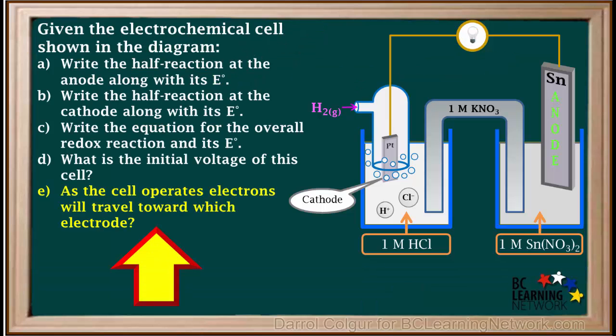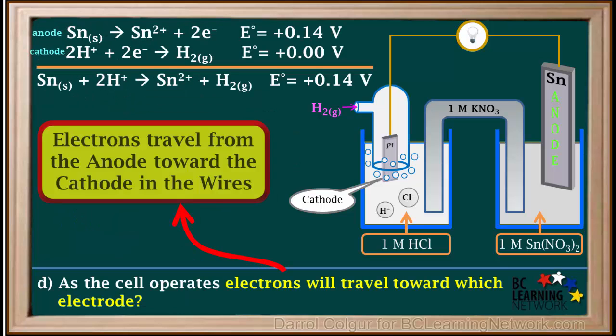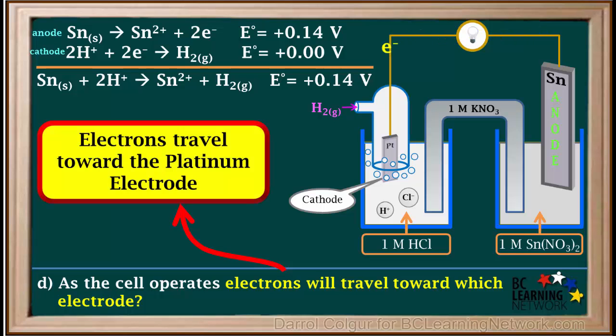The E part of this question asks which way electrons are traveling as this cell operates. The cell will operate if we replace the voltmeter with a light bulb. Remember that electrons always travel from the anode to the cathode through the wires. So they are traveling from the tin electrode toward the platinum electrode.